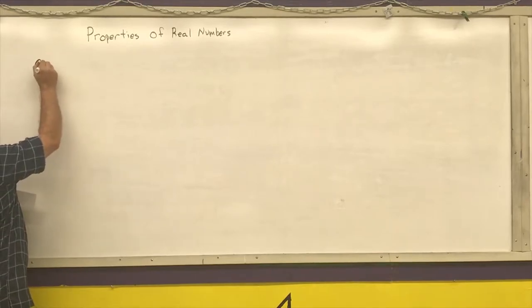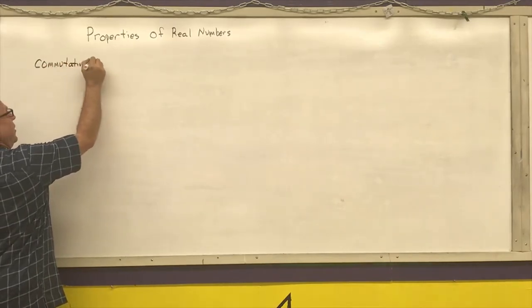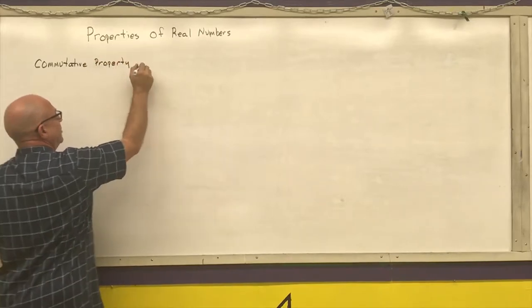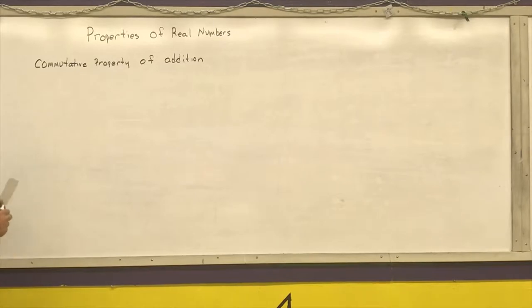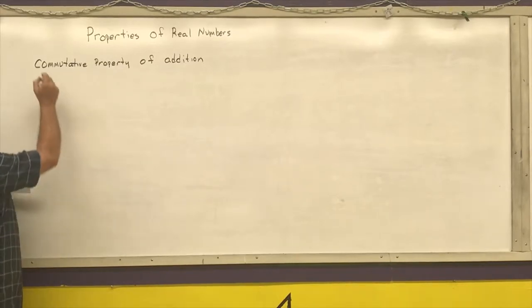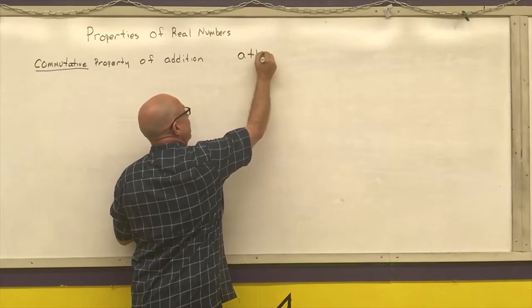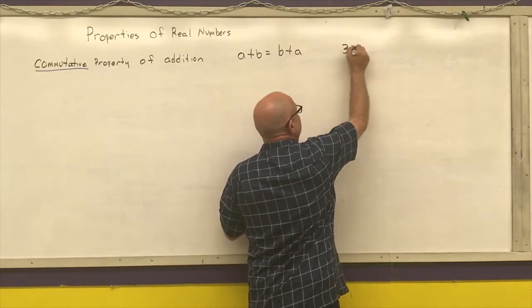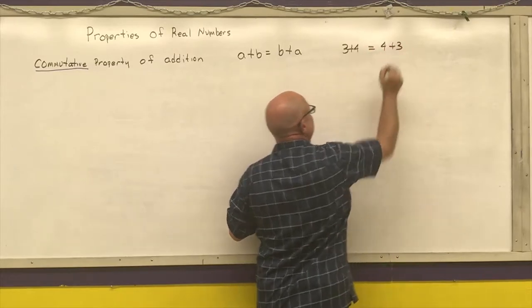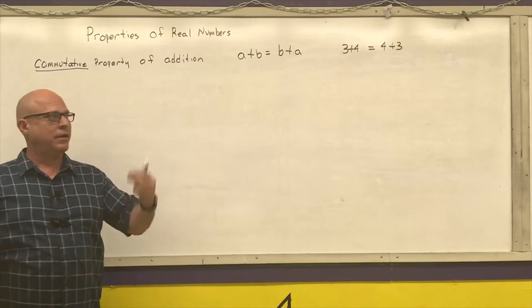The first one is the commutative property of addition. A big thing to remember is the word commutative means order does not matter. In this case, A plus B is the same thing as B plus A. A real world example: 3 plus 4 is exactly the same thing as 4 plus 3. So if I am given 3 plus 4, I can rewrite it directly as 4 plus 3. I can change the order of addition.